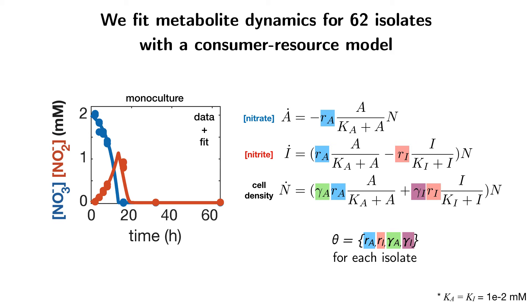To see this, let's take the example of a simple two-strain community. Each strain in the community has its own set of these four parameters. We can form the community metabolic prediction by summing the rate contributions of each strain to nitrate and nitrite consumption dynamics. This prediction is essentially assuming that the strains are interacting in their pair culture only through resource competition.